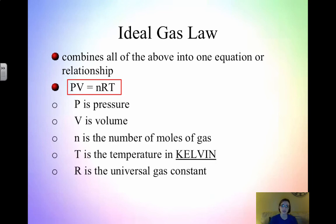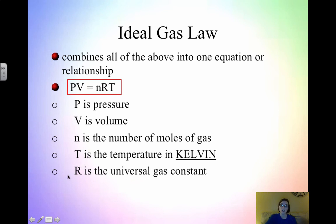A reminder of all the variables: P is pressure, V is volume, N is number of moles, T is temperature in Kelvin, and R is the universal gas constant. Pressure can be in a variety of units. Volume needs to always be in liters, N is always in moles, and T is always in Kelvin.